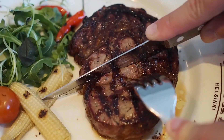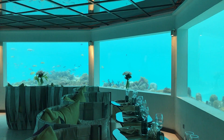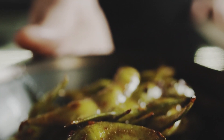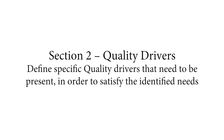Now that we know what our customer need is, let's translate this need into something specific that we can actually measure. We can try to get a bit more clarification by asking our customers what a nice dining experience actually entails. And to this, our customer might answer: well, it entails the restaurant experience, the food quality, reasonable pricing, and of course I also want to have a fast service. We call these quality drivers. Quality drivers are the second section of the CTQ tree, and here we define specific quality drivers that need to be present in order to satisfy the identified need.